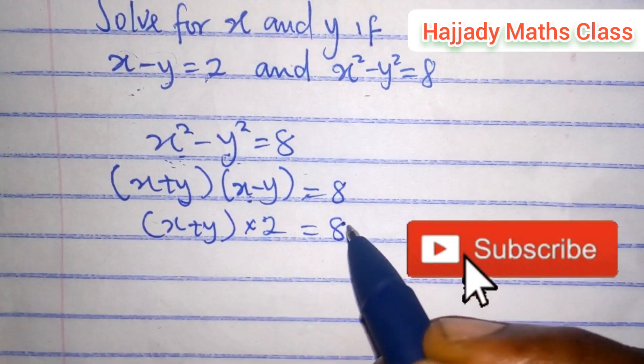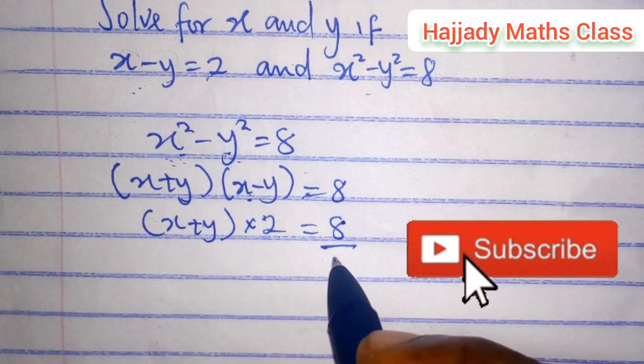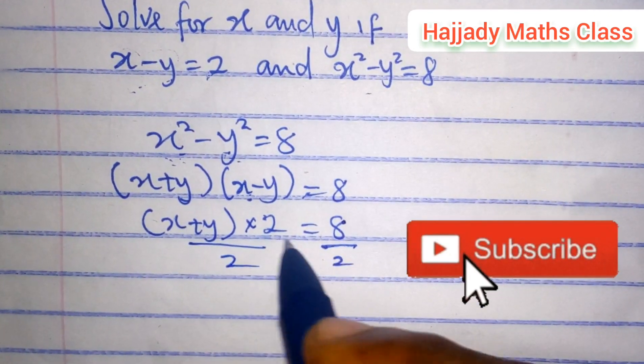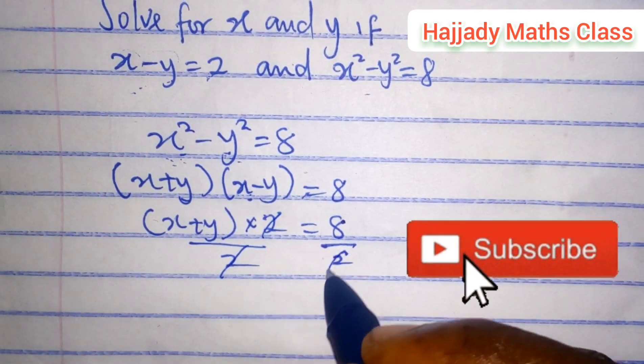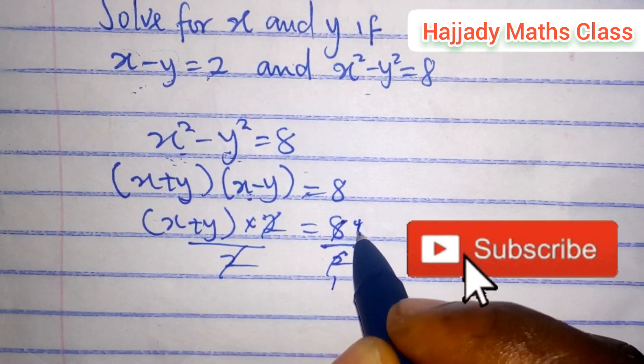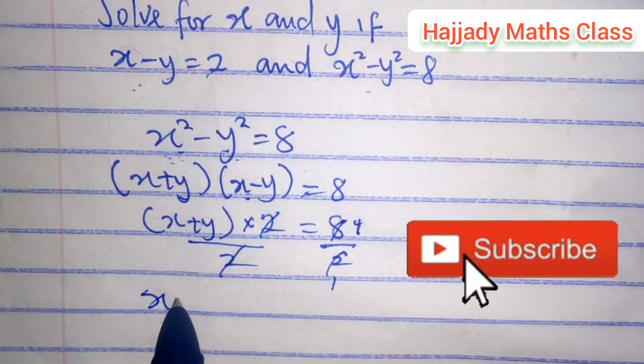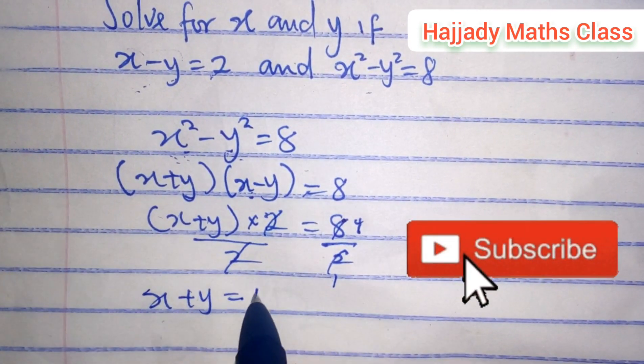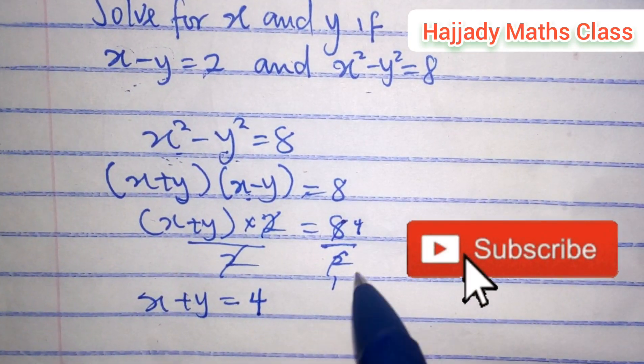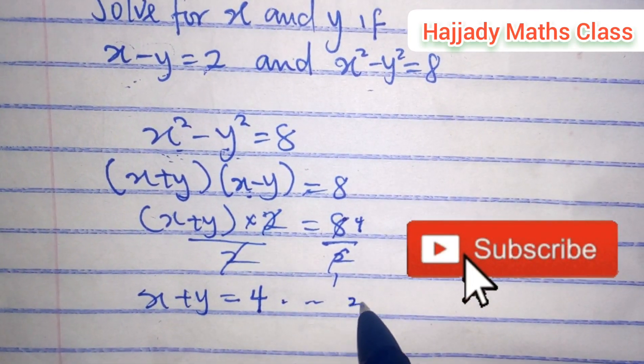Solving this further, you can divide both sides by 2. So 2 can cancel out 2. 2 here 1, 2 here you have 4. So here we have x plus y equals 4. So here you form another equation. Let's call this equation 2.